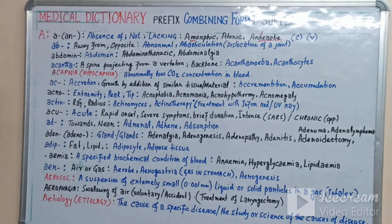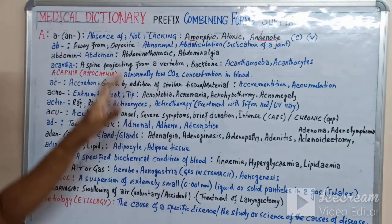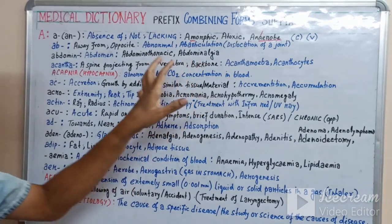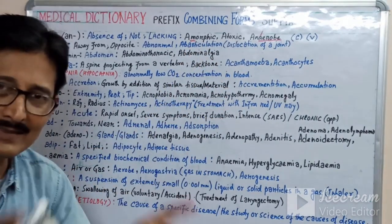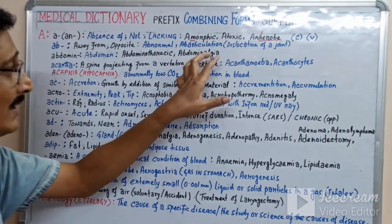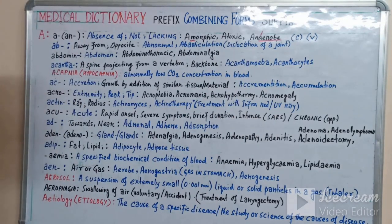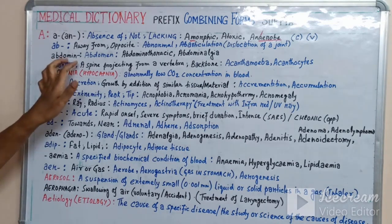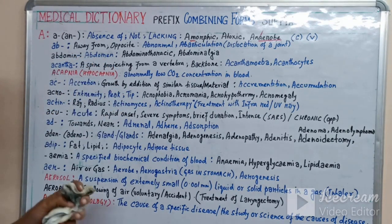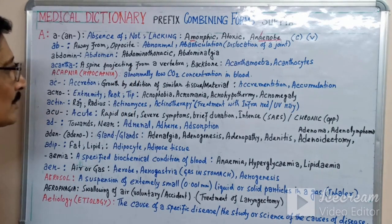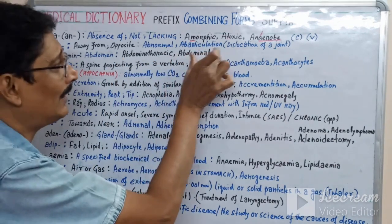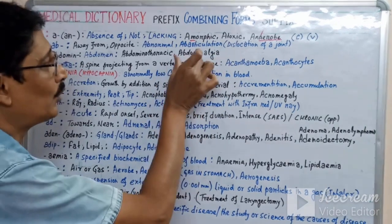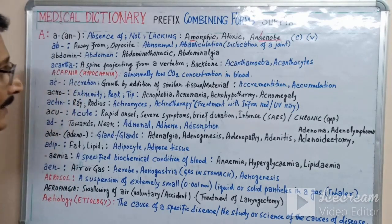The prefix 'ab-' means away from or opposite. For example, 'abnormal' is the opposite of normal. 'Ab-articulation' — articulation means arranged in a defined manner, so ab-articulation is the dislocation of a joint. 'Abdomen' refers to our stomach area. 'Abdominothoracic' is a combining form of abdomen and thoracic (throat/chest area). 'Abdominalgia' — 'algia' means pain — so abdominalgia means pain in the abdomen.